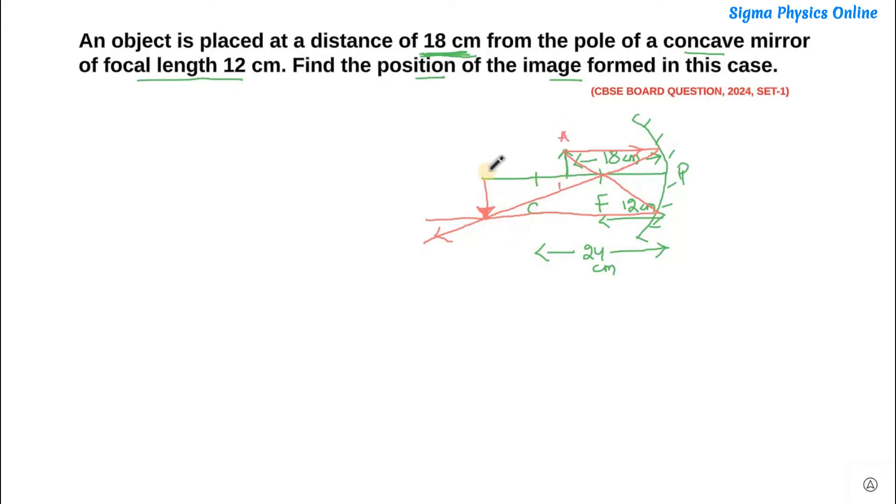So if AB is our object, A dash B dash will be our image. As you can see from the ray diagram, the image is formed beyond C. The image distance which we will get would be more than 24 cm because the image will be formed beyond the center of curvature, and the image will be a real image. It will be inverted and it will be magnified.